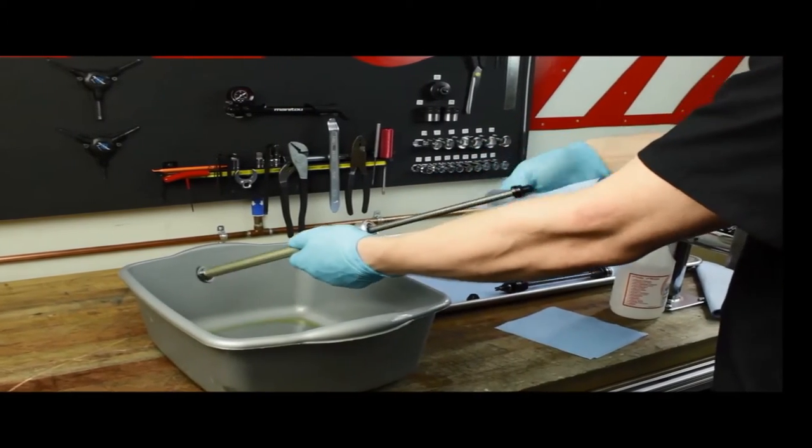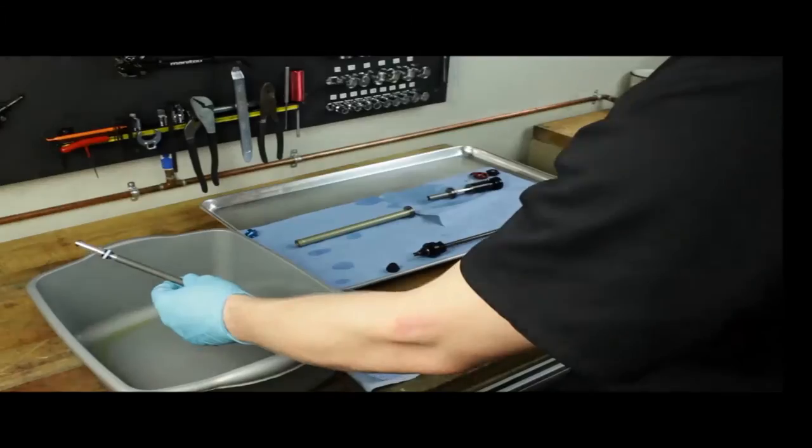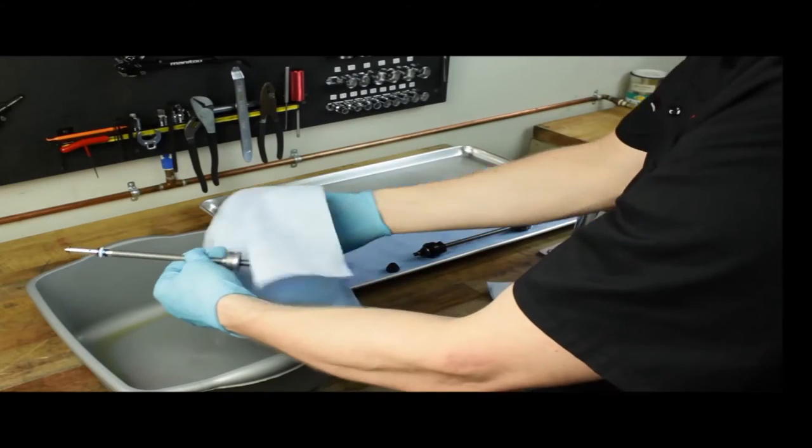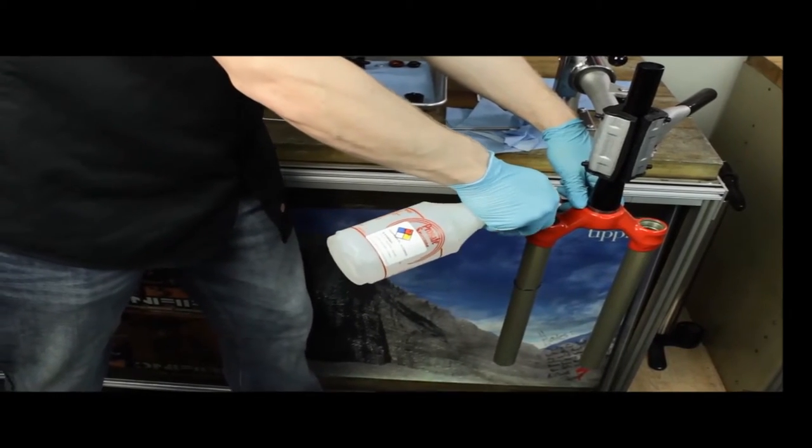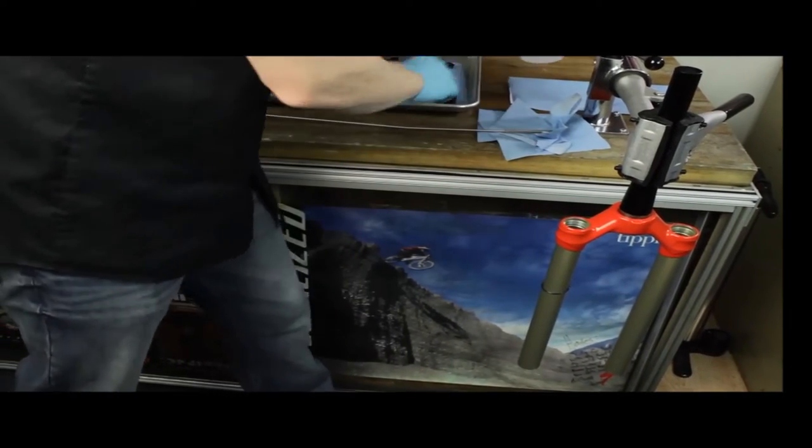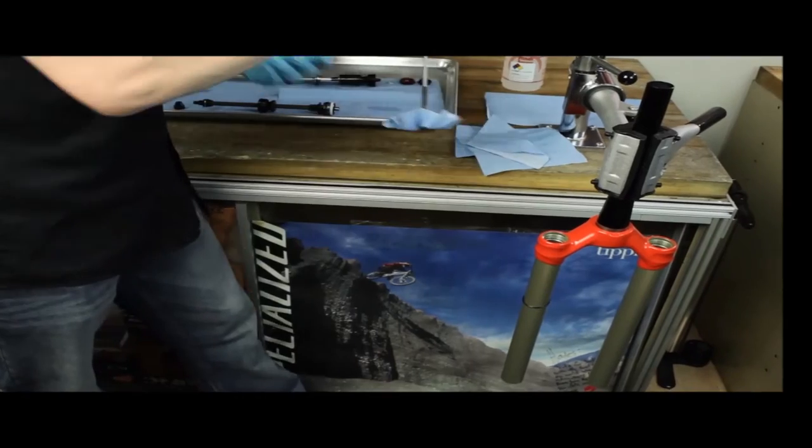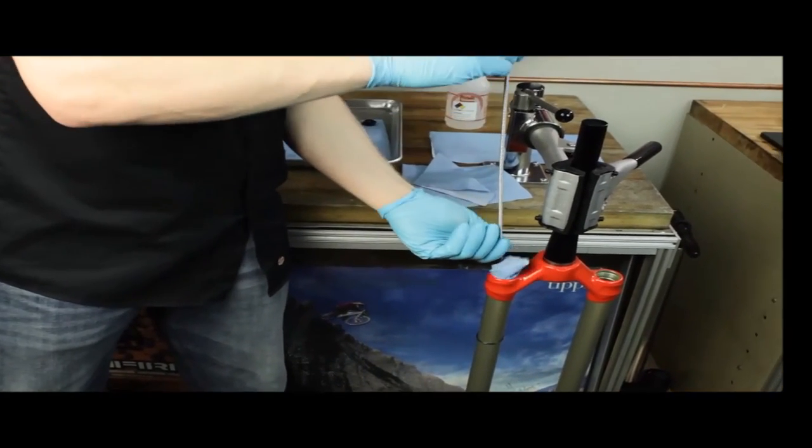If you do not have access to compressed air, an alternate method of cleaning is to first clean each component with isopropyl alcohol and then wipe them down with a lint-free towel. Using this method, you will also have to let the part sit so the excess alcohol can evaporate.